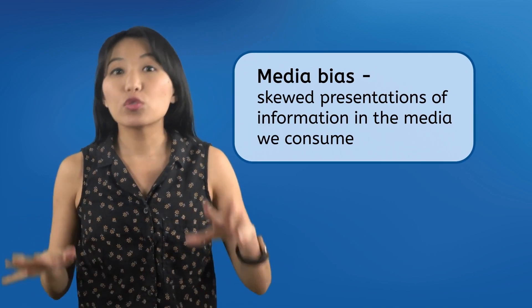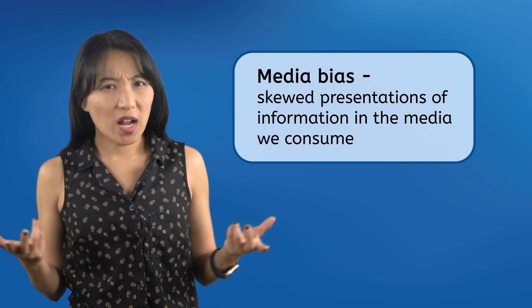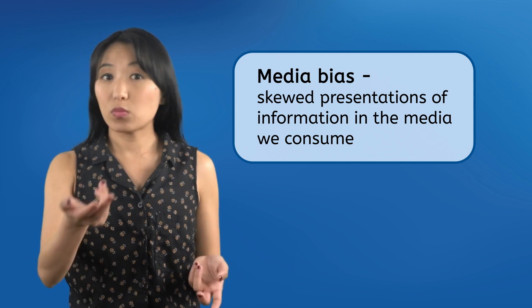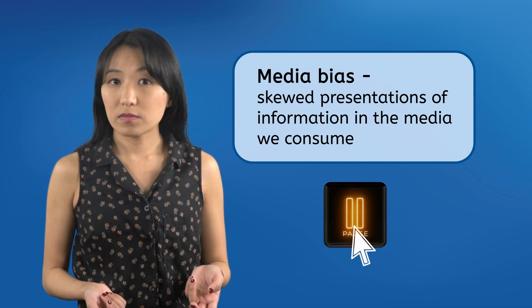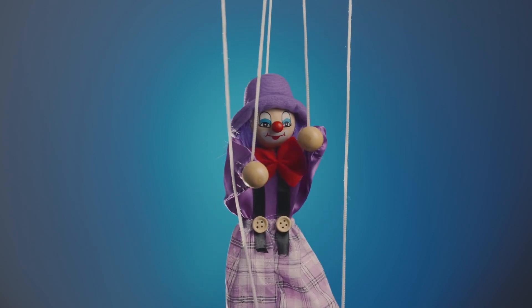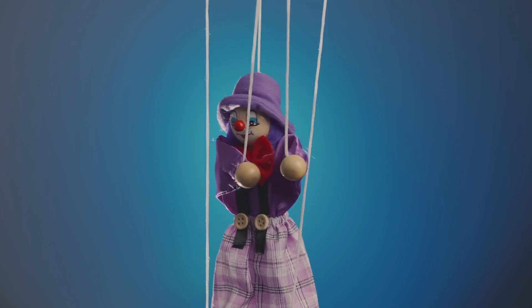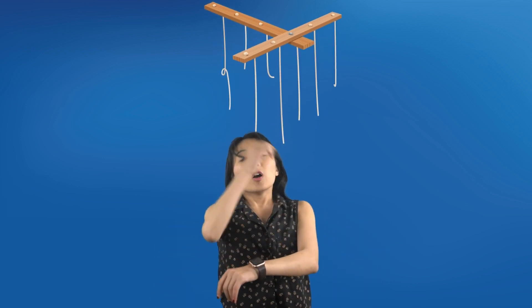When doing research on the internet, you'll run into a lot of media bias — skewed presentations of information in the videos, articles, and posts we consume. But why would somebody intentionally skew the facts? Media bias is often used to manipulate people into thinking and doing what the creator wants them to, like puppeteers pulling strings to control their puppets. You should be wary of bias no matter where you get your information from. Even videos on MIA Academy could have biased information, but we try really hard to keep that from happening.